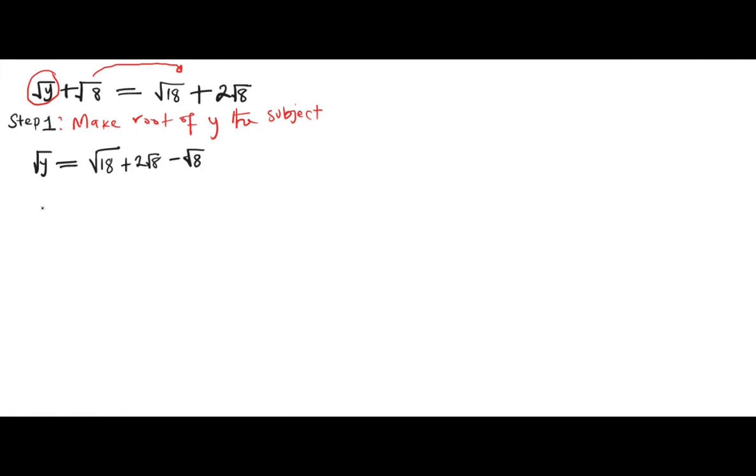So the next thing is for us to simplify this further. We have √y = √18. Then you have 2√8 - √8. So this is going to give you +√8.